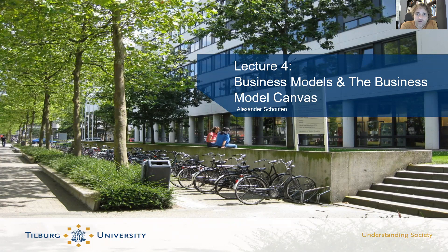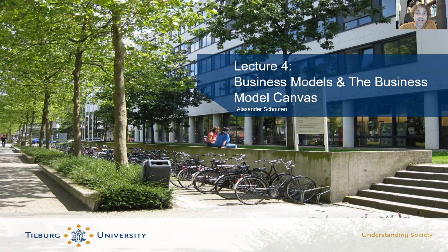We started the lecture this morning with an explanation of what business models are. I explained that there are four distinct parts to a business model: first, the innovation or idea you have; second, the markets — who will buy or adopt your innovation; third, cost and revenue — how much your innovation costs and how much it yields in revenue through different revenue streams; and finally, the organization you need to take into account.